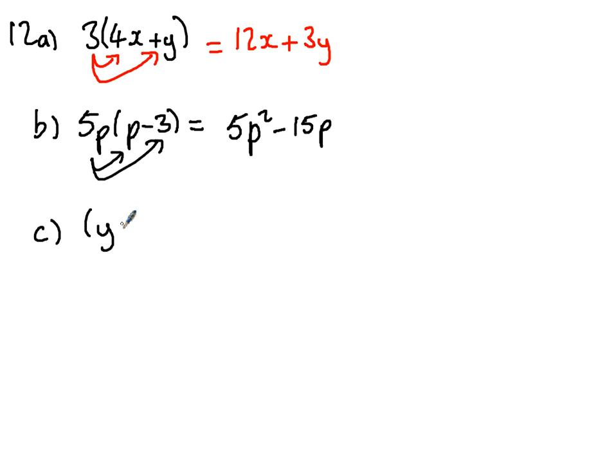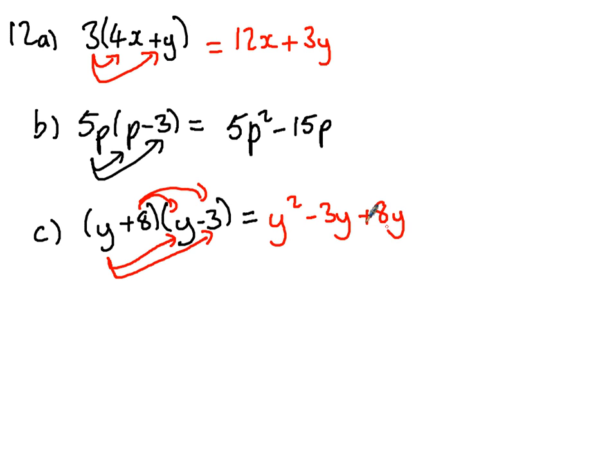C. Expand and simplify. This is what I call the double claw. Some people have the smiley face method. We're timesing that by that, and that by that, and then this by this, and also this by this. We've got Y times Y, which is Y squared. Y times minus 3, which is minus 3Y. Plus 8 times Y, which is plus 8Y. And plus 8 times minus 3, overall being minus, and that's 24. That'll give you Y squared, and you put your Ys together. Minus 3, adding 8, that'll give me a positive 5Y, take away 24.